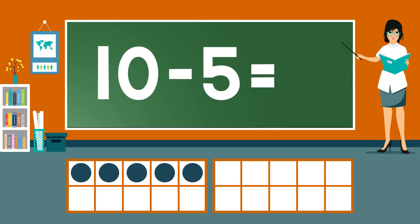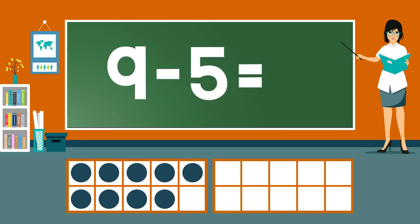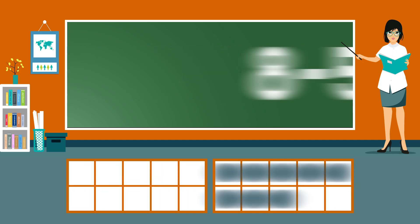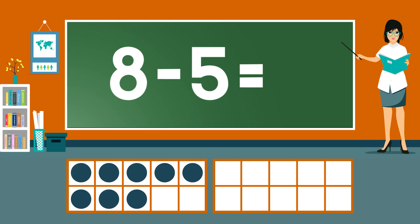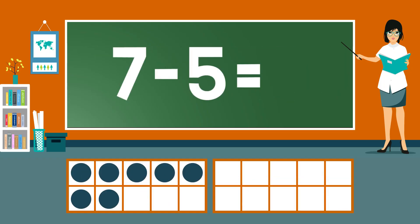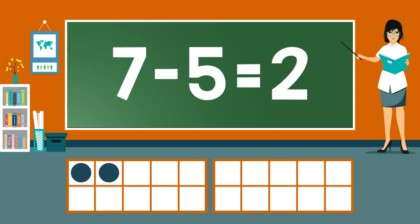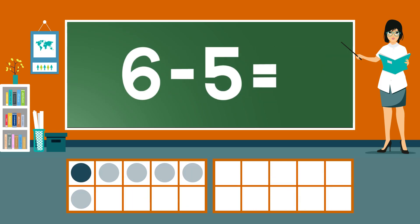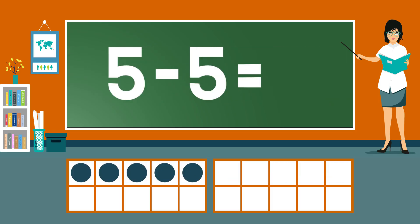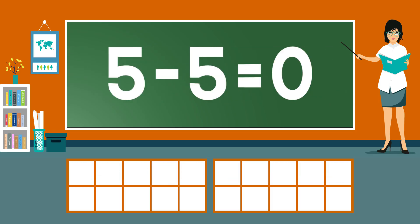10 minus 5 equals 5. 9 minus 5 equals 4. 8 minus 5 equals 3. 7 minus 5 equals 2. 6 minus 5 equals 1. 5 minus 5 equals 0.